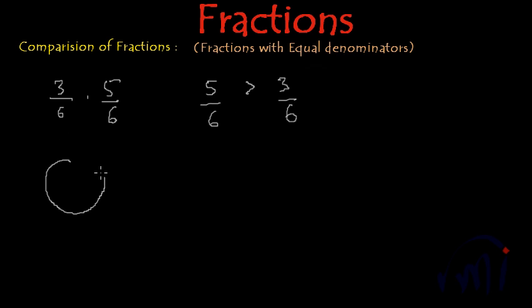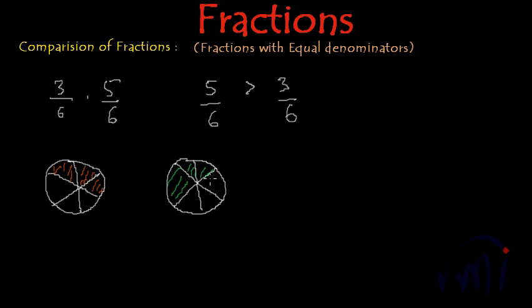To understand it better, we will draw one picture and divide it into 6 parts. 3 by 6 is represented by 3 shaded portions, and 5 by 6 is represented by 3, 4, and 5 portions shaded. As we can see, 5 by 6 looks bigger than 3 by 6. Numerator 5 is bigger than numerator 3, and the denominators are the same. So the fraction 5 by 6 is greater than the fraction 3 by 6. This was the comparison of fractions when the denominators are equal.